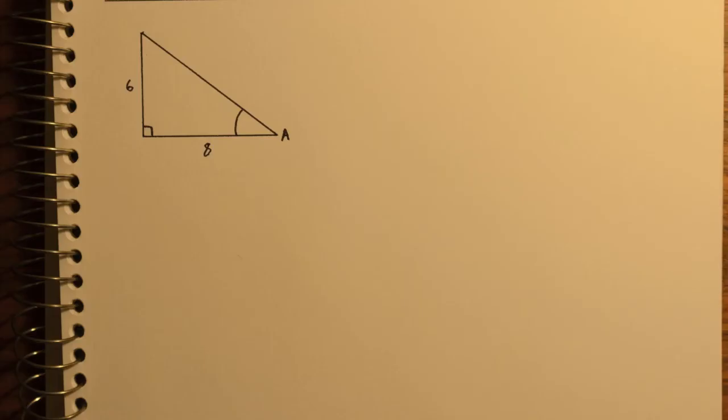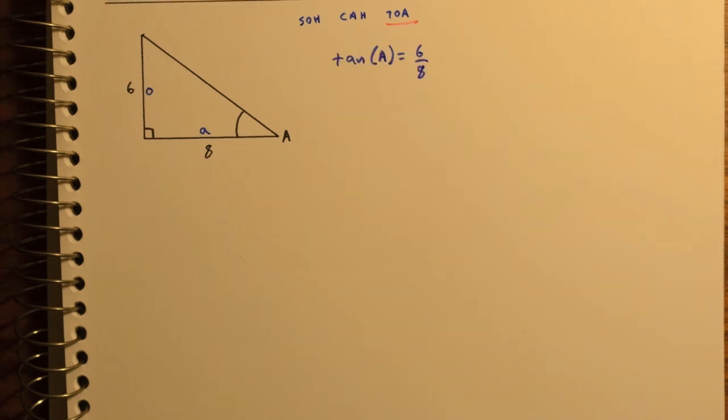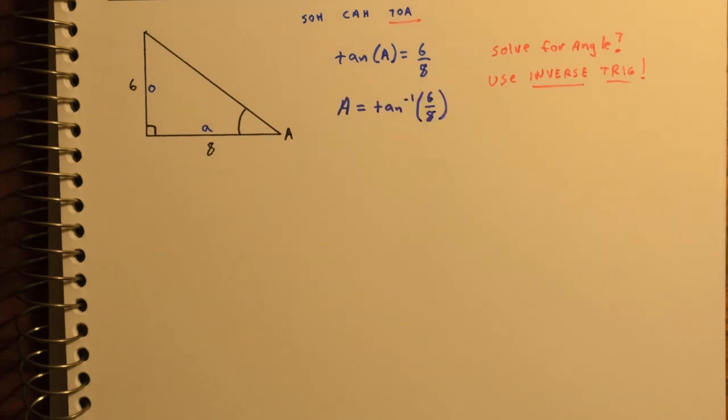Alright, let's try an example with a triangle. Here we have six and eight are given. We want to find angle A. And so therefore, if we know the opposite and we know the adjacent, we'll use the tangent function. So the tangent of angle A is six-eighths. Whenever we want to solve for an angle, remember we're using inverse trig. And so A is the inverse tangent of six-eighths. Now, six-eighths, if you chose, you could simplify that to three-fourths or .75.